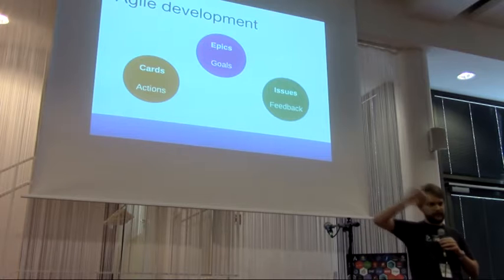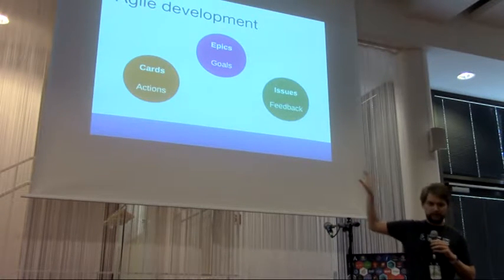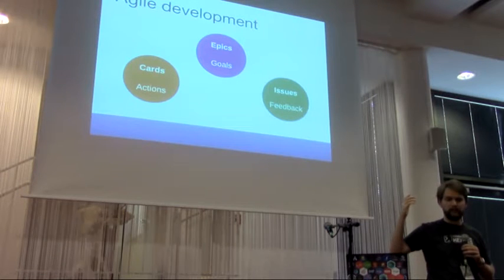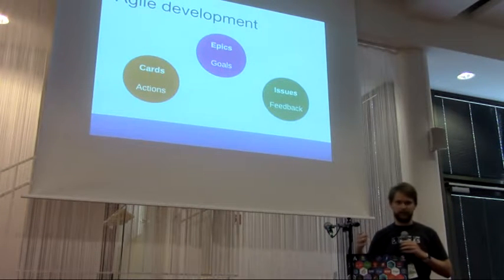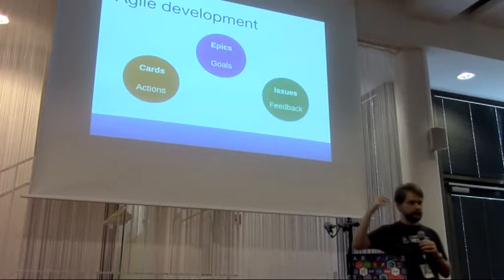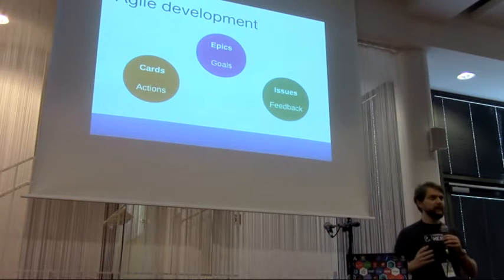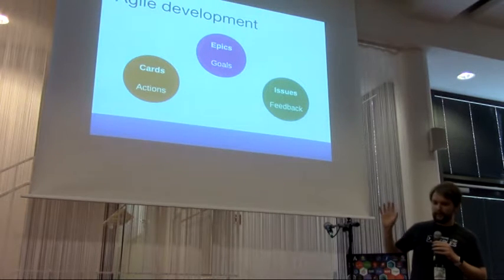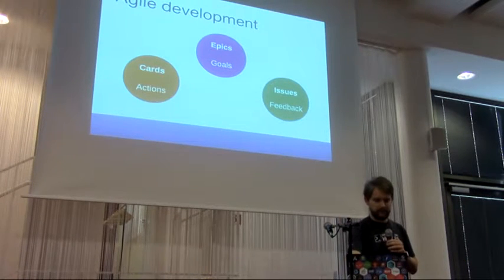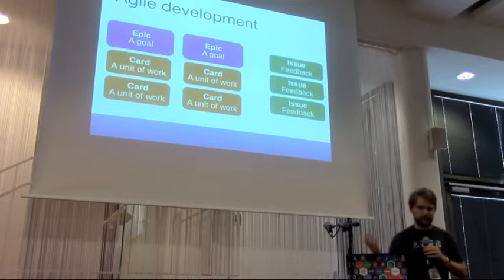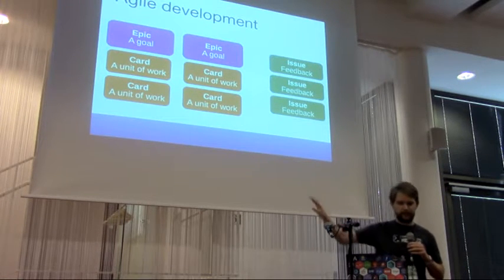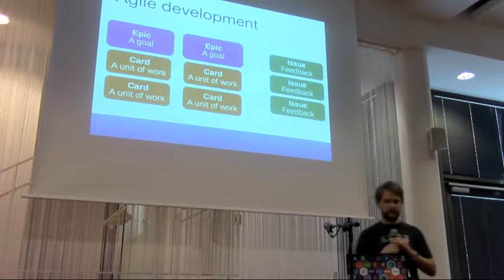Some open source projects only use an issue tracker, which is fine, but it might be harder for onboarding new people because it gets messy — you'd have user feedback, RFEs, and tasks of various sizes all mixed together. Having these three groups — epics as goals, cards as units of work, and issues as user feedback — can really help structure things.